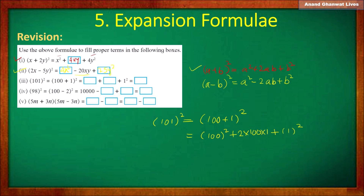The square of 100 — doubling the zeros — gives 10,000; plus this product gives 200; plus the square of 1, which is 1. So 10,000 + 200 + 1 = 10,201 is the answer.